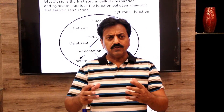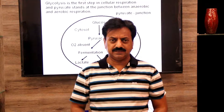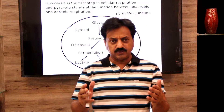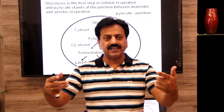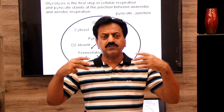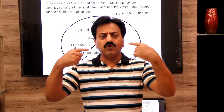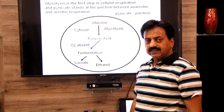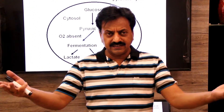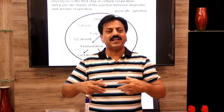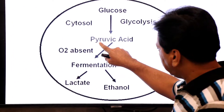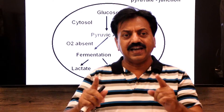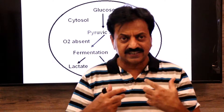Why does pyruvate acid go to the fermentation process when oxygen is unavailable? Recall that in glycolysis step 6, NAD accepts a hydrogen ion and two electrons and becomes NADH. Those electrons are meant to be passed onward — the final electron acceptor is oxygen. But if oxygen is absent, the NADH gives its electrons back to pyruvate, and pyruvate acid gets converted into lactic acid.